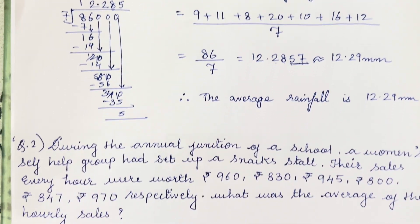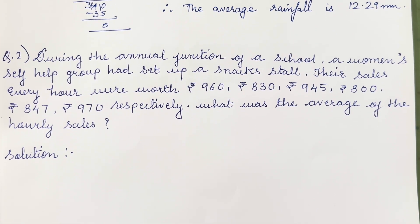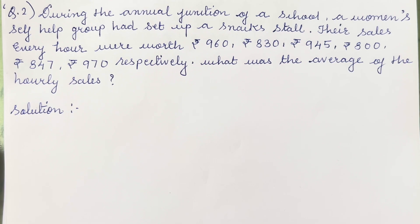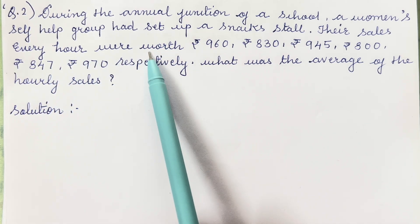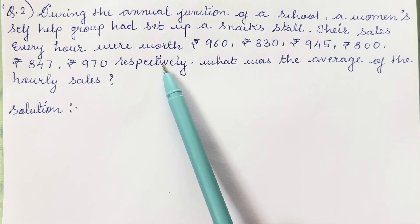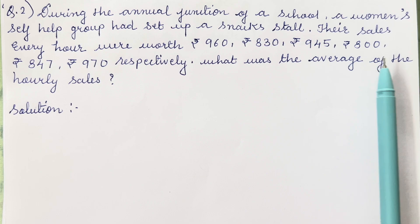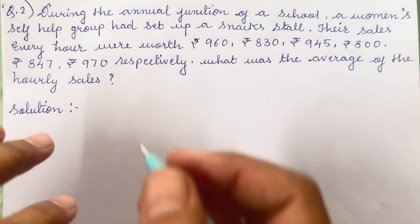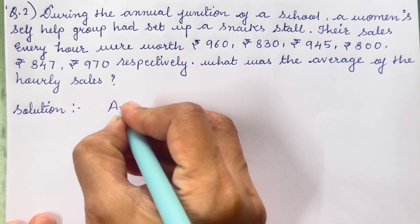Let's move on to the next sum which is: during the annual function of a school a women's self-help group had set up a snack stall. Their sales every hour was worth rupees this much. What was the average of the hourly sales. Now over here again we will write average formula.